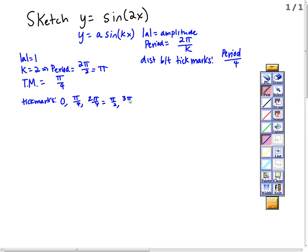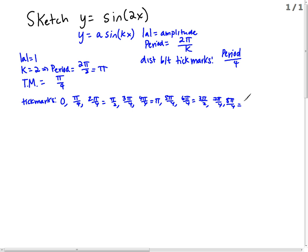Continuing, we get 3 pi over 4, then pi, then 5 pi over 4, then 6 pi over 4 which is 3 pi over 2, then 7 pi over 4, and so on.